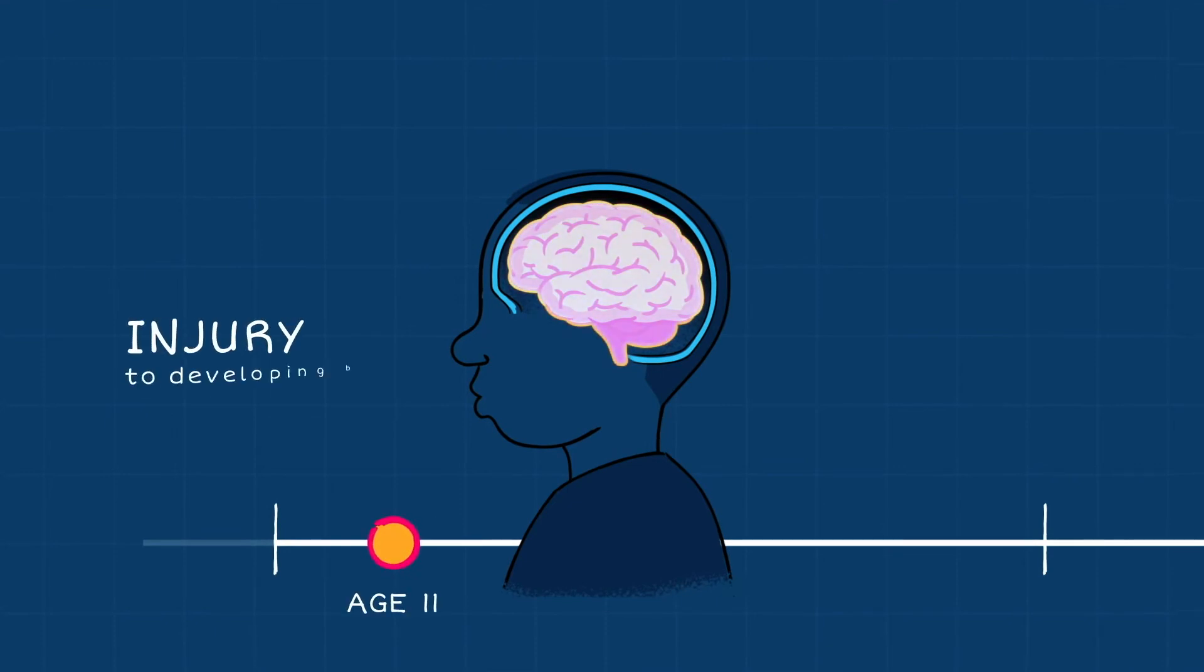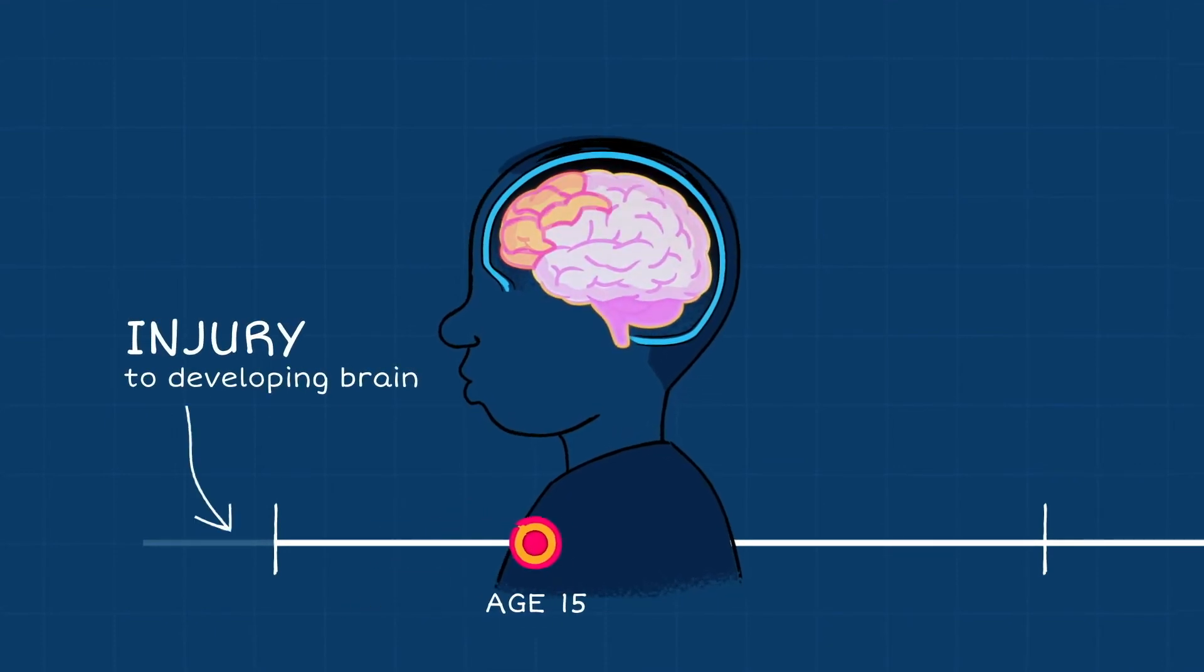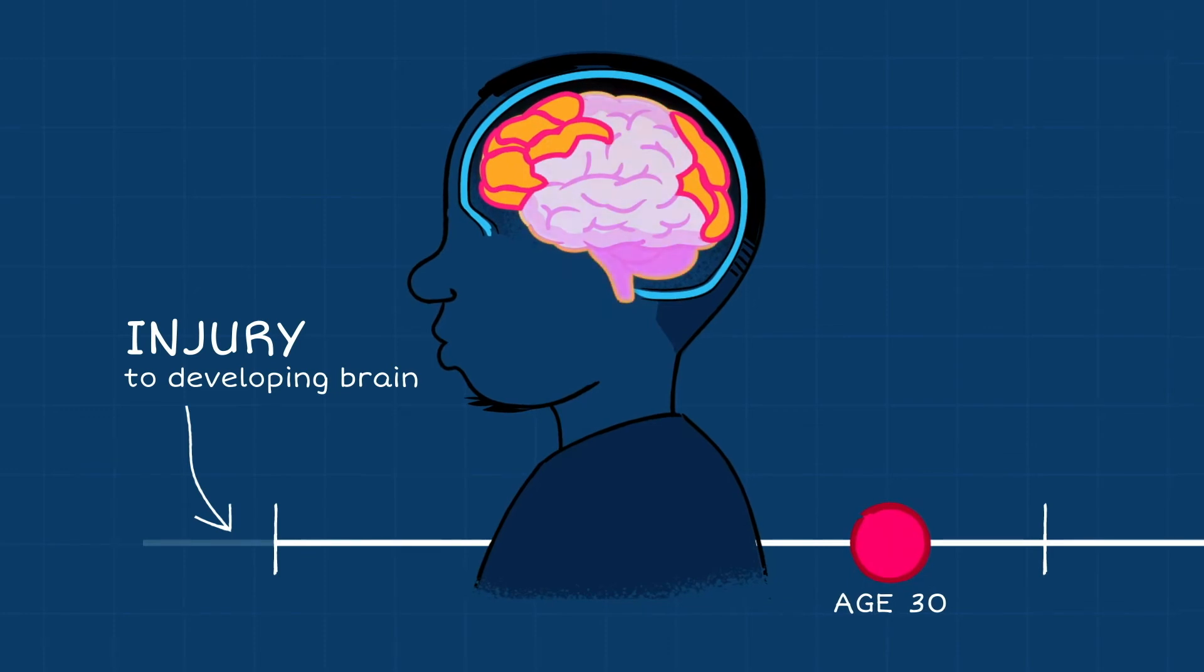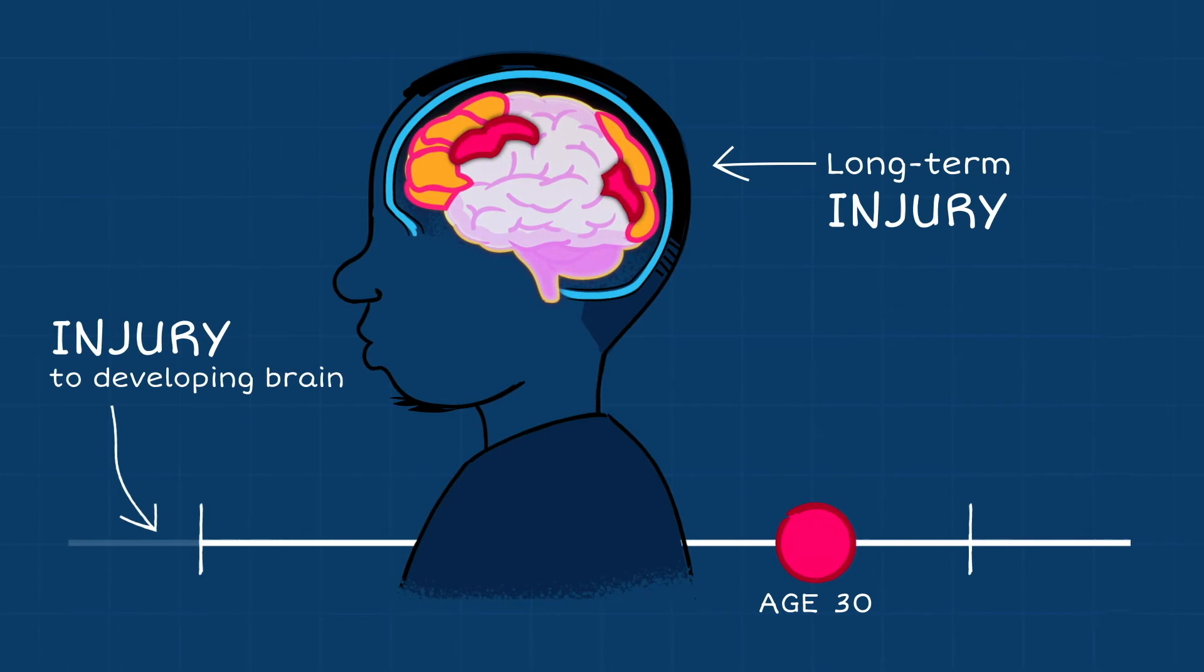Children's brains and bodies are still growing, and an injury to their developing brains may put them at risk for more serious injury or long-term developmental problems. The brain of the illustrated boy reappears along a timeline. An arrow pointing to the timeline reads, Injury to developing brain. The timeline begins at age 11. The boy and the brain grow in size as the dot on the timeline slides from left to right, increasing to age 30. Several sections of the brain flash red.